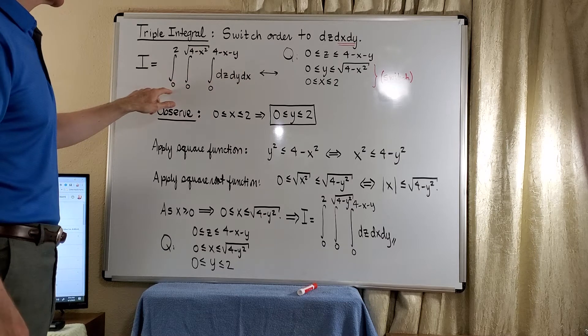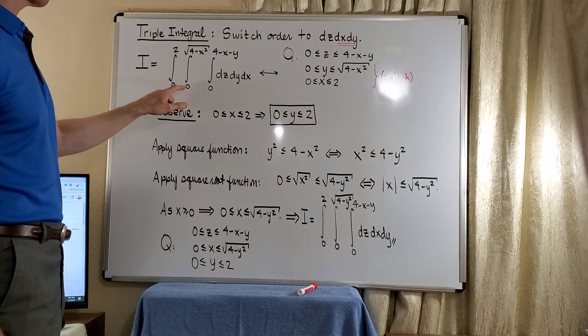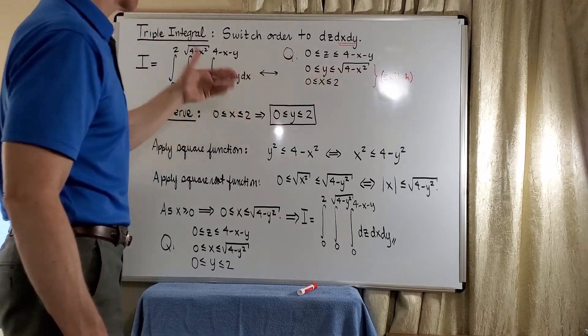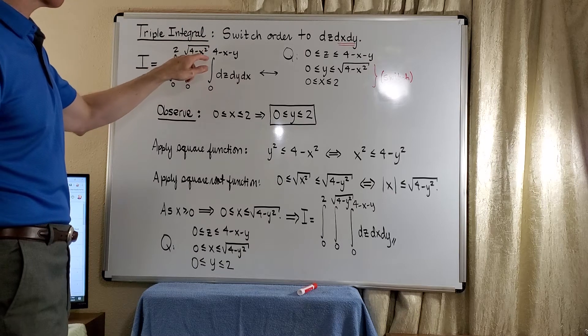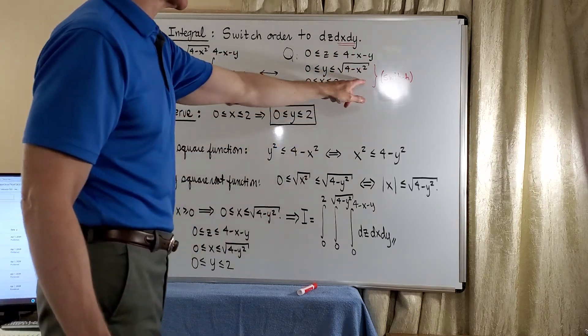So for the x, we see that we run from 0 to 2. For the y, we see that we run from 0 to the square root of 4 minus x squared. And for the z, we see that we run from 0 to 4 minus x minus y, as we have here. And we need to switch these two.